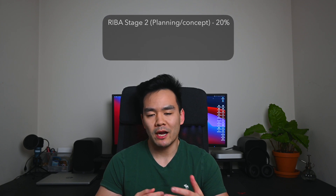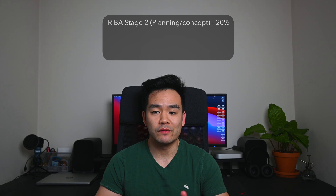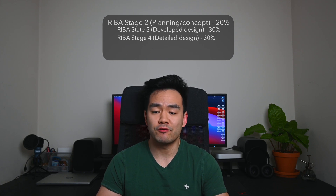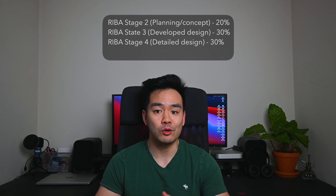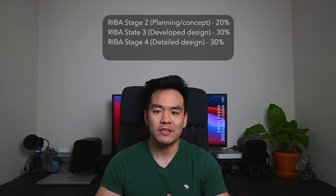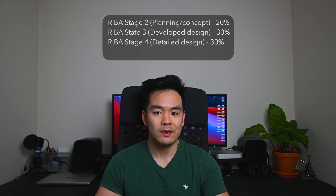We can break these down into different stages and allocate a set amount of fee per stage. At stage 2, which is commonly the concept or planning stage, we might allocate 20% of the total fee. As you move on to stages 3 and 4 where you're doing significantly more work — designs, calculations, drawings, and models — you'd allocate more, say 30% each. The remaining 20% can then be allocated to the construction stage.